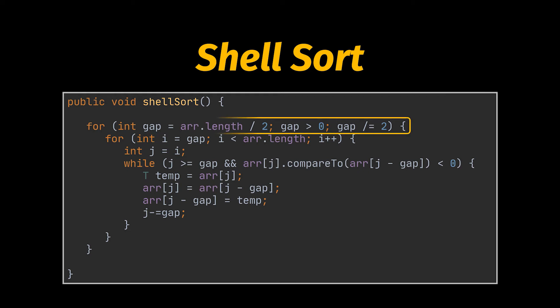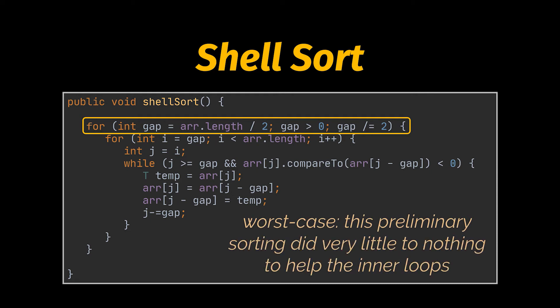If the preliminary gap-shrinking step succeeds, shell sort will outperform insertion sort. But what we're looking for is the worst case: if this preliminary sorting did very little or nothing, we're stuck with the normal insertion sort algorithm. Therefore, the Big O of shell sort in its worst case is O(n²).